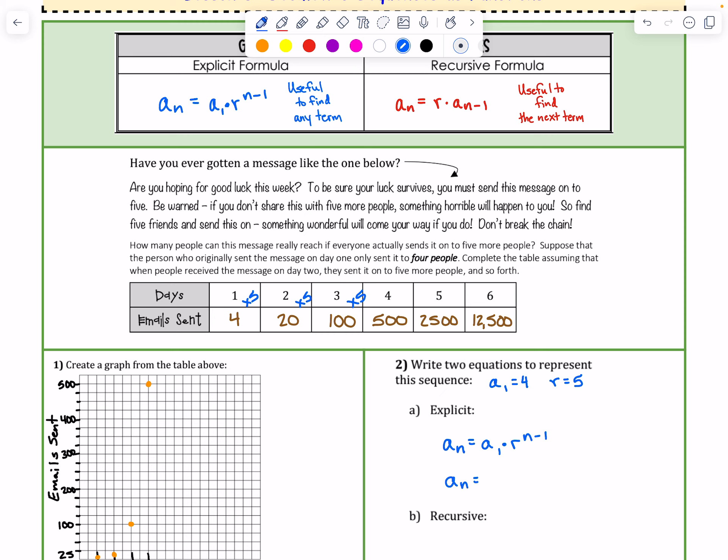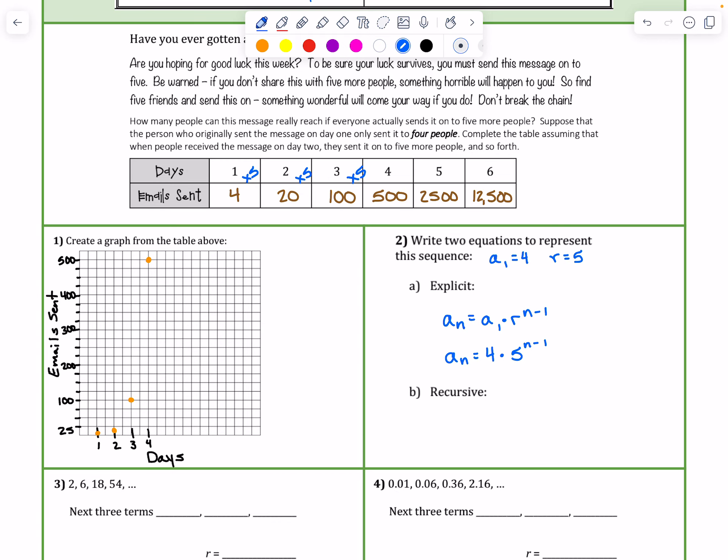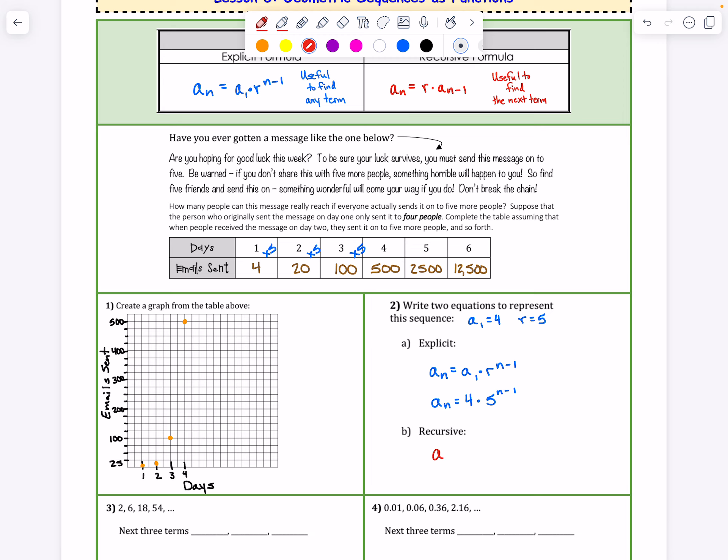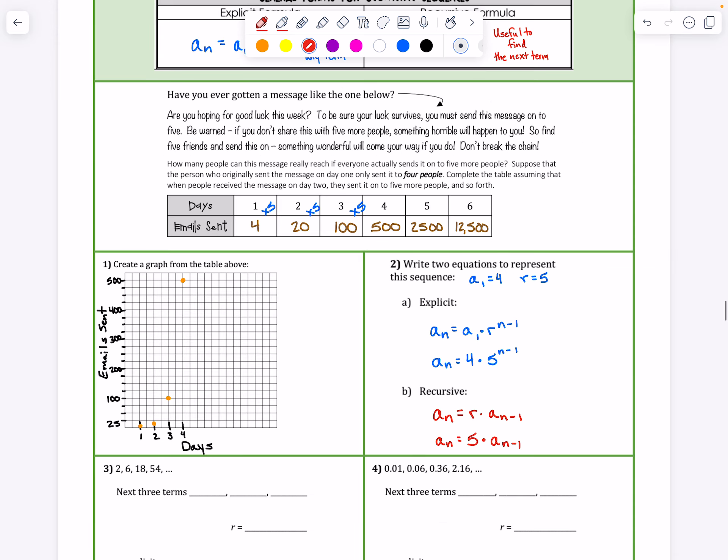Alright, for the recursive formula, let's write A sub N equals R times A sub N minus 1. So that'll just be A sub N equals the common ratio, which is 5 times A sub N minus 1. Okay, so that's it for that example.